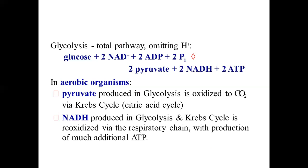Glycolysis occurs in the cytosol. The NADH produced in glycolysis and the Krebs cycle is reoxidized by the respiratory chain with the production of much additional ATP, which we have studied in cellular respiration through NADH and further ATP production.